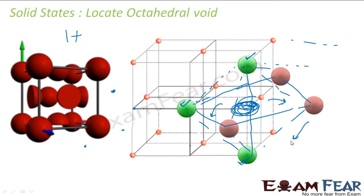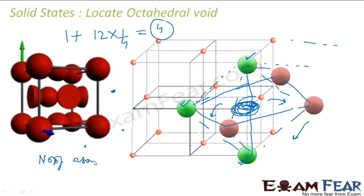In that case, we have 12 octahedral voids because there are 12 edges, but each is shared by four, so the net octahedral voids in this particular cell will be 3 from the edges plus 1 from the center, giving a total of 4. The number of atoms is also 4, so the number of octahedral voids exactly matches the number of atoms.